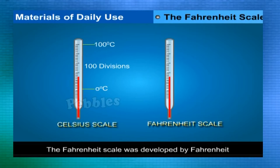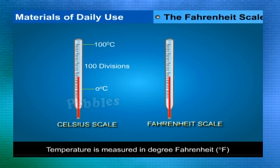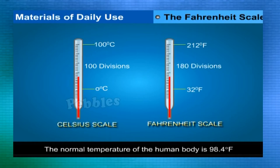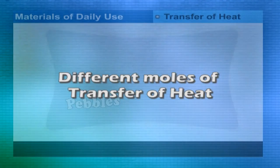The Fahrenheit scale was developed by Fahrenheit (1686–1736). The lower fixed point is 32°F and the upper fixed point is 212°F. The normal temperature of the human body is 98.4°F.